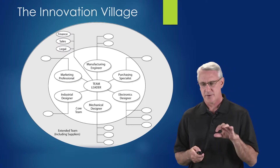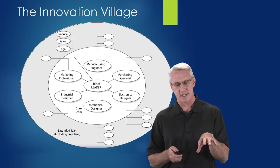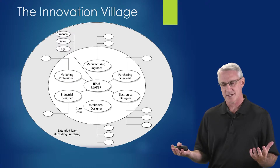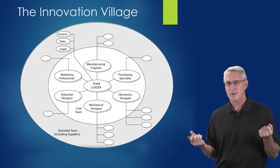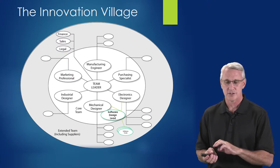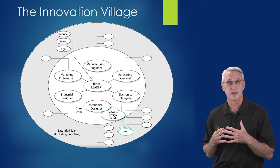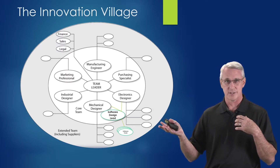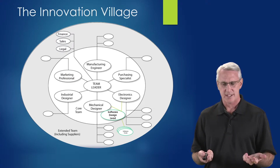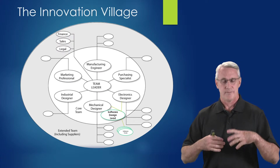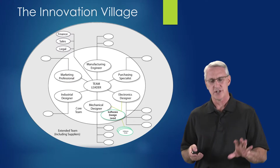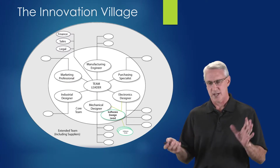We come full circle back to manufacturing. What do you suppose is really missing that would bring this diagram more into the 21st century? When you're going through this concept, you see mechanical designer, electronics designer, industrial designer — they're really missing a key element that is part of many technology companies today. What's really missing is the software piece, which is usually integral to having the mechanical and electronic systems working together. Software is really what's missing. Typically in any type of company, you want to have a software lead with a whole bunch of software developers underneath.